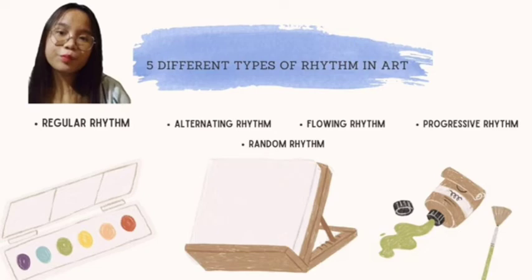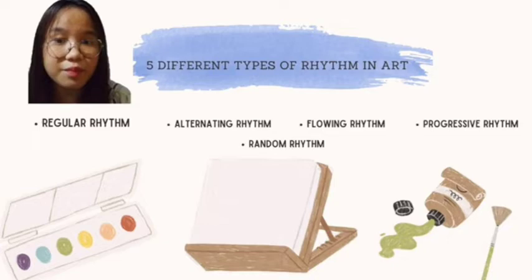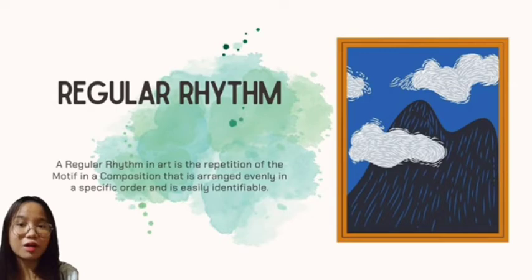Let's now proceed to the principles of art rhythm. There are five different types of rhythm in art: regular rhythm, alternating rhythm, flowing rhythm, progressive rhythm, and random rhythm.